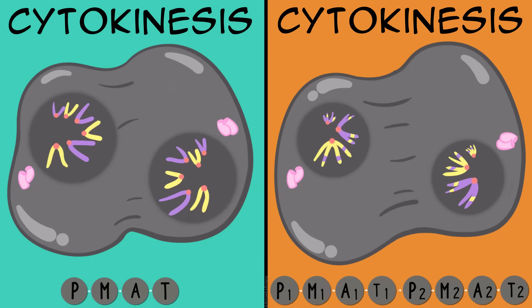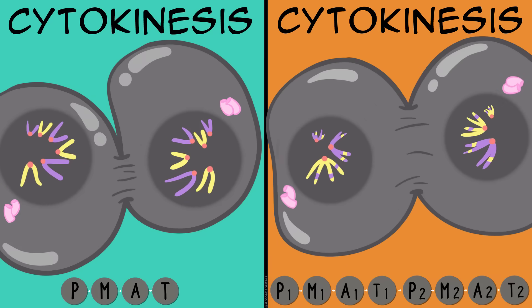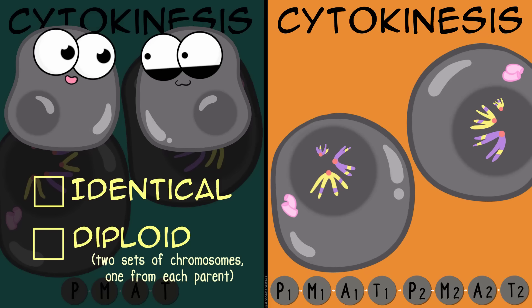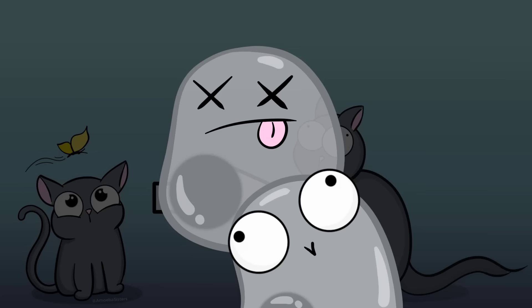Cytokinesis follows to split the cytoplasm to complete the actual dividing of the cell. At the end of mitosis and cytokinesis, we end with two identical diploid cells. In humans, they would both have 46 chromosomes. This is great for organism growth—growing requires making more cells, after all—or replacing damaged cells.